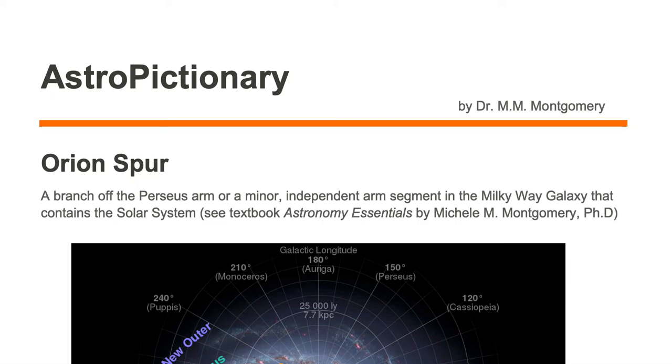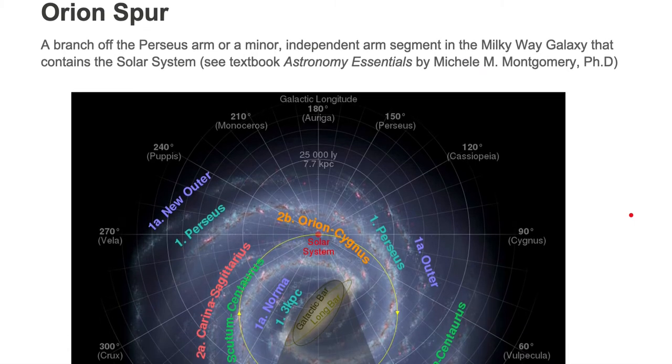The Orion Spur is a branch off the Perseus arm or a minor independent arm segment in the Milky Way galaxy that contains the solar system. Let's take a look at this Orion Spur.